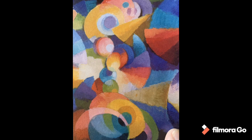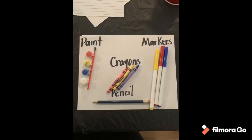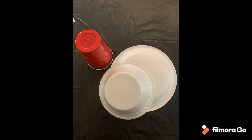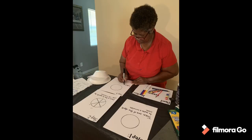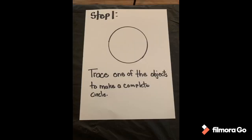We will create a color wheel and experiment with mixing colors. The materials you will need are crayons, markers, paint, and a pencil. You will also need a small plate, cup, or bowl. Finally, you will need a piece of paper — copy or notebook paper.